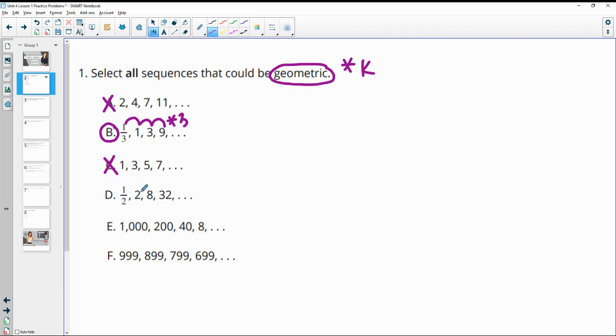Part D: one half to two, two to eight, eight to thirty-two. So this is actually multiplying by four each time. So this one is geometric.